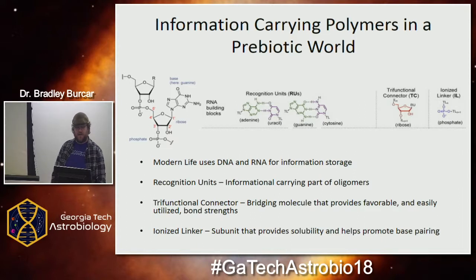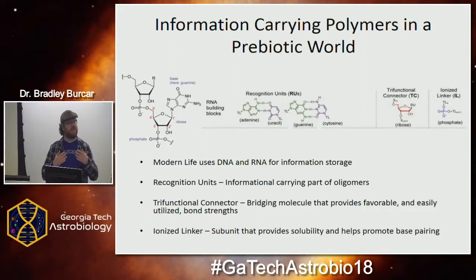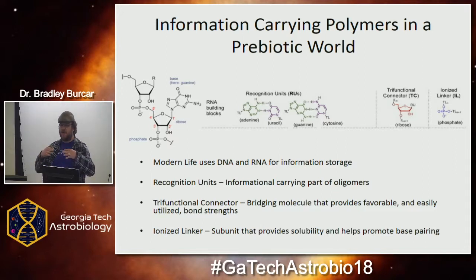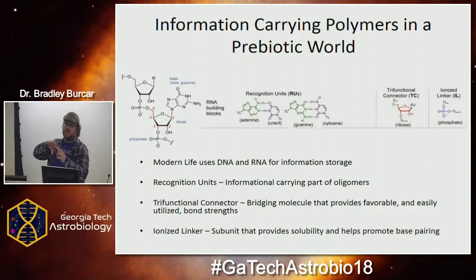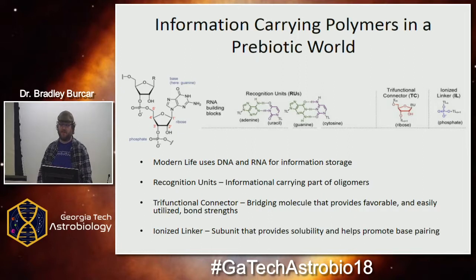You have the ionized linker, something that has some sort of charge on it. Modern life uses phosphate, and this helps it to solubilize in solution, and also helps the base pairing to happen by repelling the negative charges. And then you have a tri-functional connector — a bridging molecule that keeps these pieces together and has nice chemical functionality to help chemistry and biochemistry down the line.